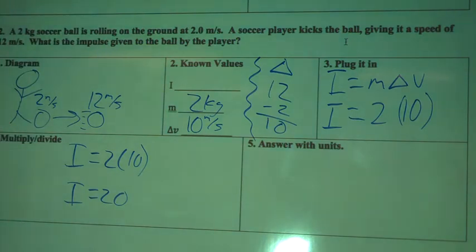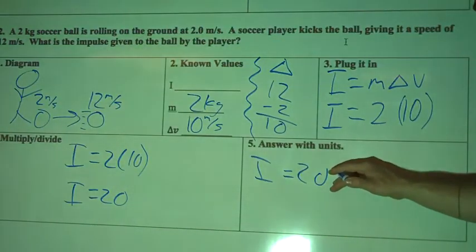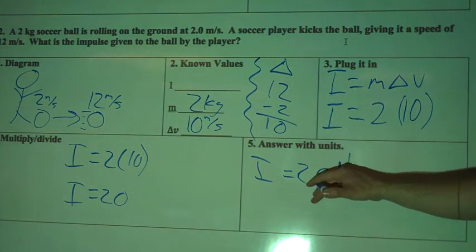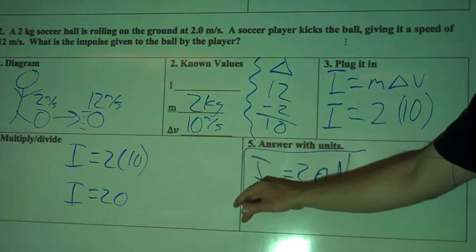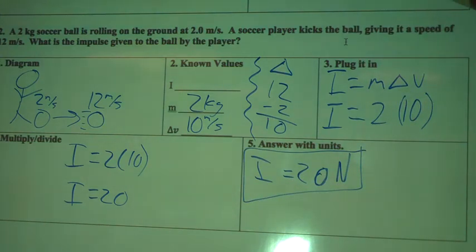And the units for impulse, so I equals 20. Impulse is measured in newtons. So that's it. Your final answer is 20 newtons. This is the force it would take to move a 2kg soccer ball from 2 meters per second to 12.